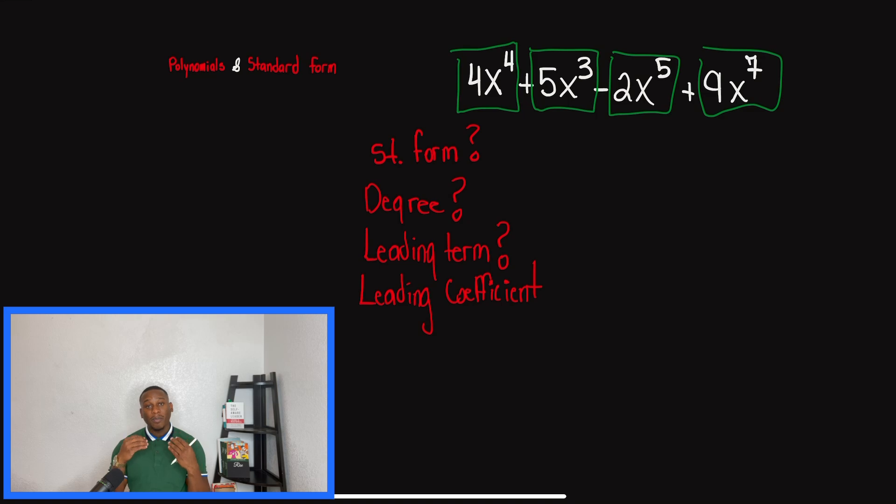And when we're talking about writing polynomials in standard form, they tell you to write it where the exponents are in descending order. So me, I like to word it different. We're going to write it basically with the greatest to least. That's what we're talking about, exponents. So when we're looking here at this problem, if I was writing this polynomial in standard form, I would have 9x to the seventh first. That's the largest exponent. And then I'm going to go in order based off the exponent, not the number in front of the variable, but based off the exponent.